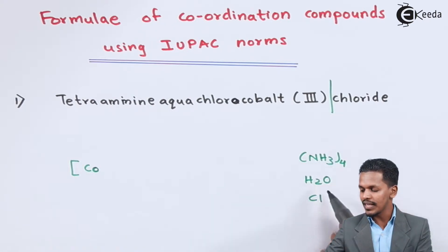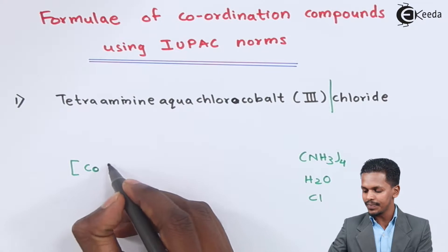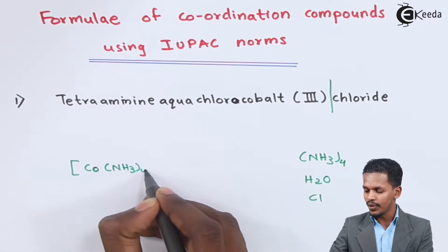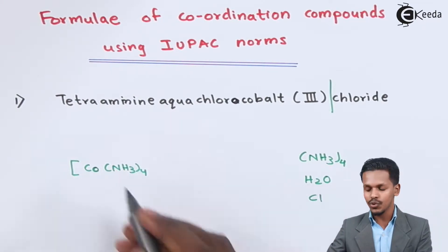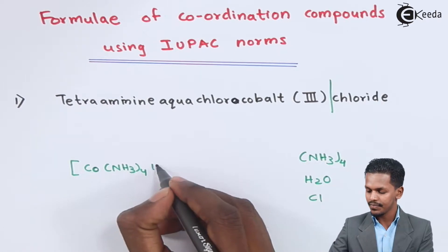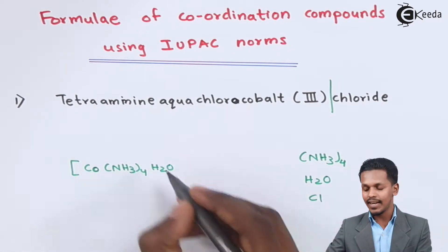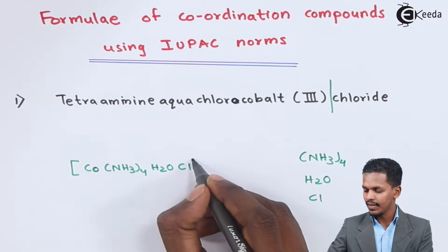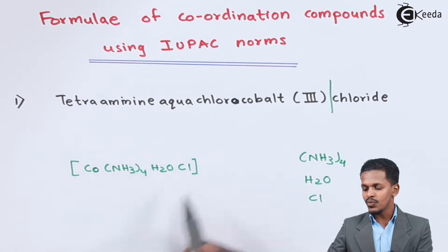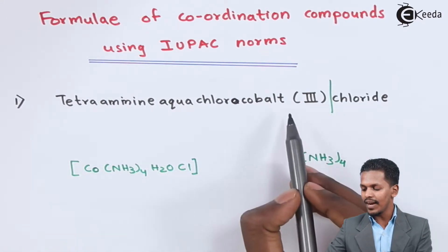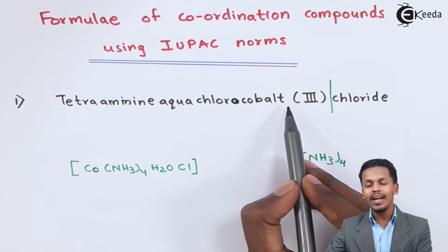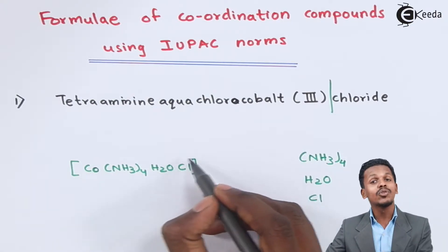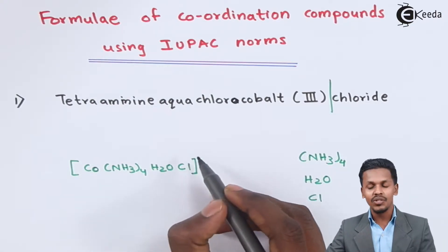Next we write NH₃ four times, then H₂O, then Cl — giving us [Co(NH₃)₄(H₂O)Cl]. Now, cobalt has an oxidation number of 3. So the complex should have an overall charge of 2 plus. This is because NH₃ and H₂O are both neutral ligands.